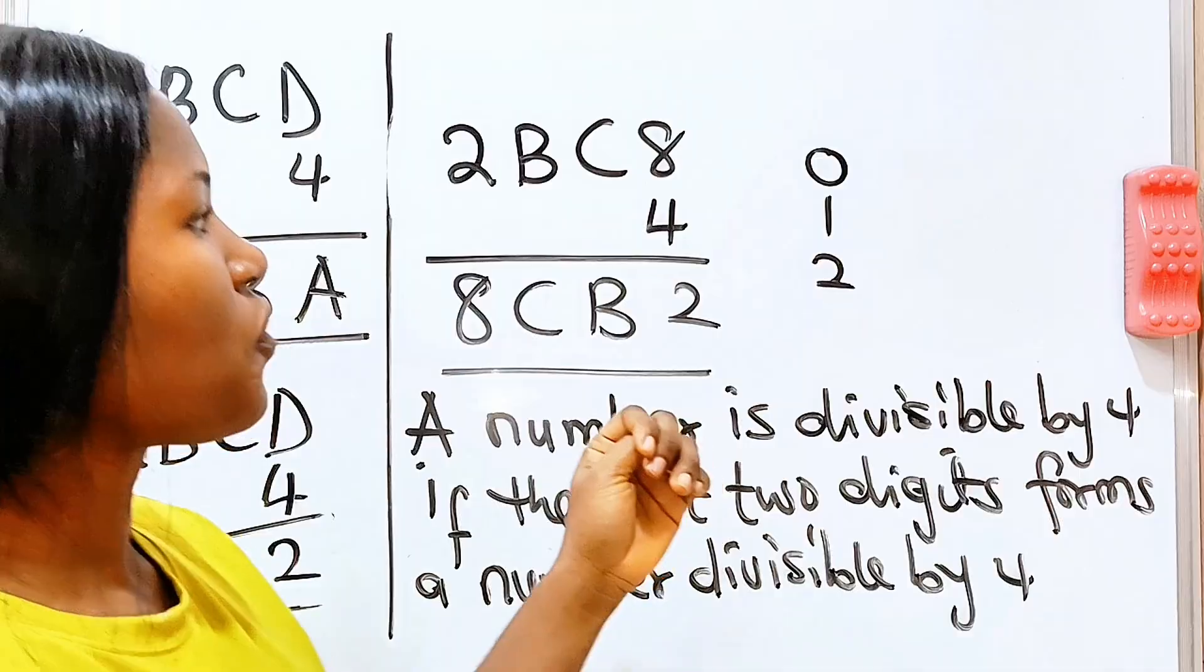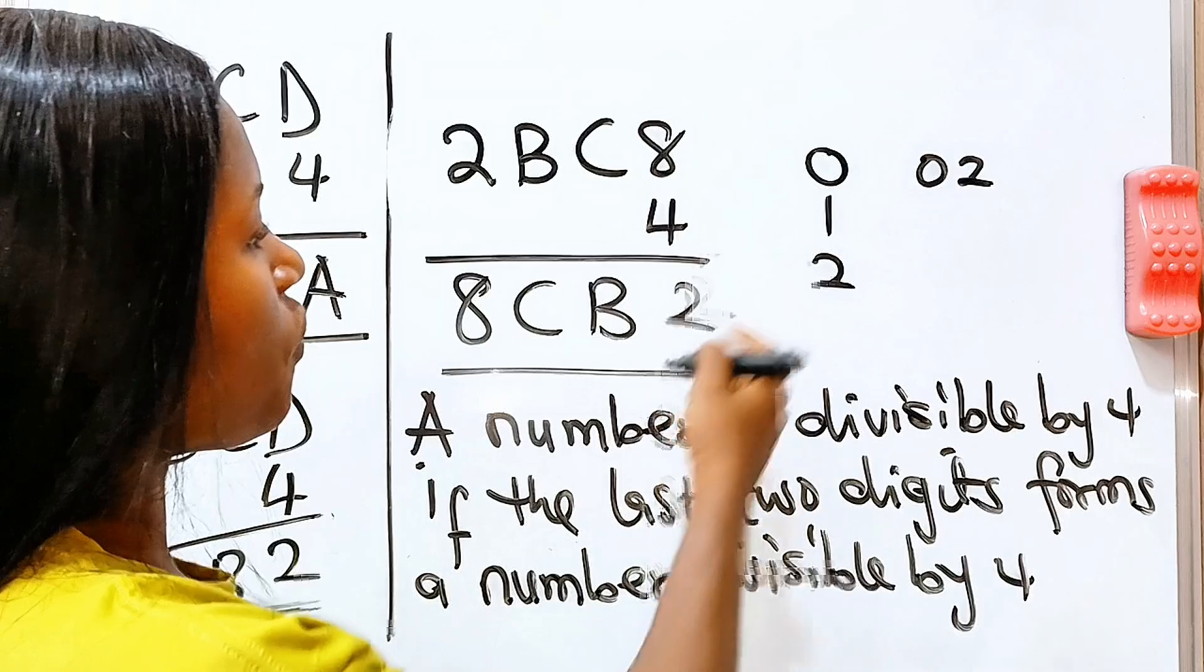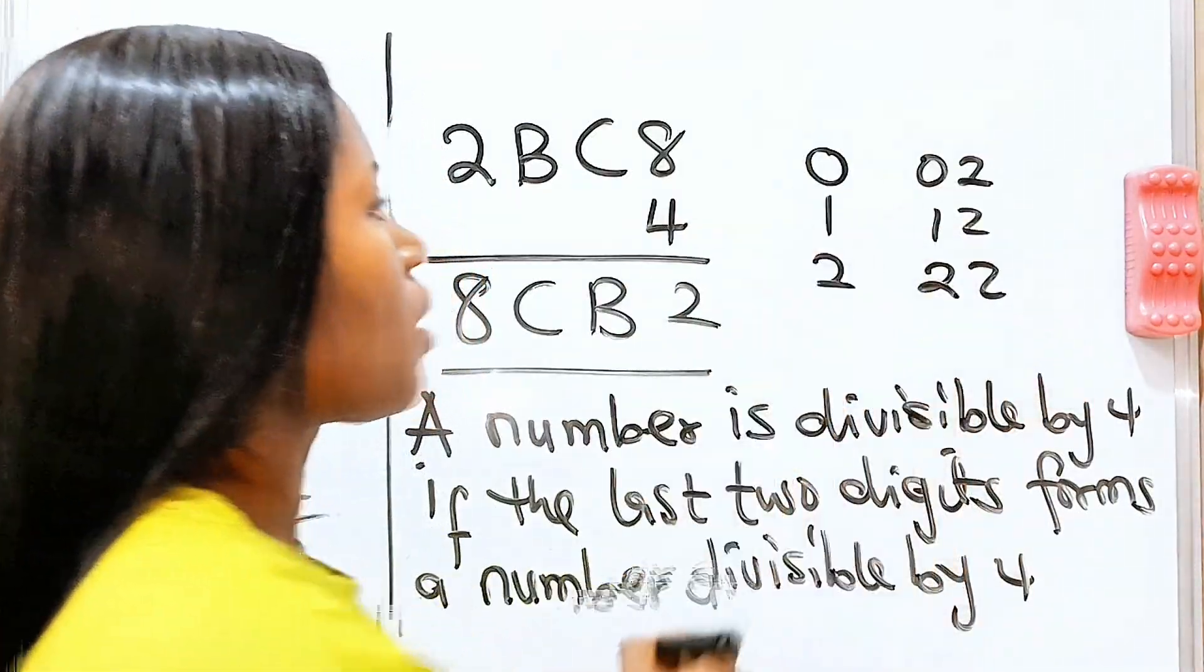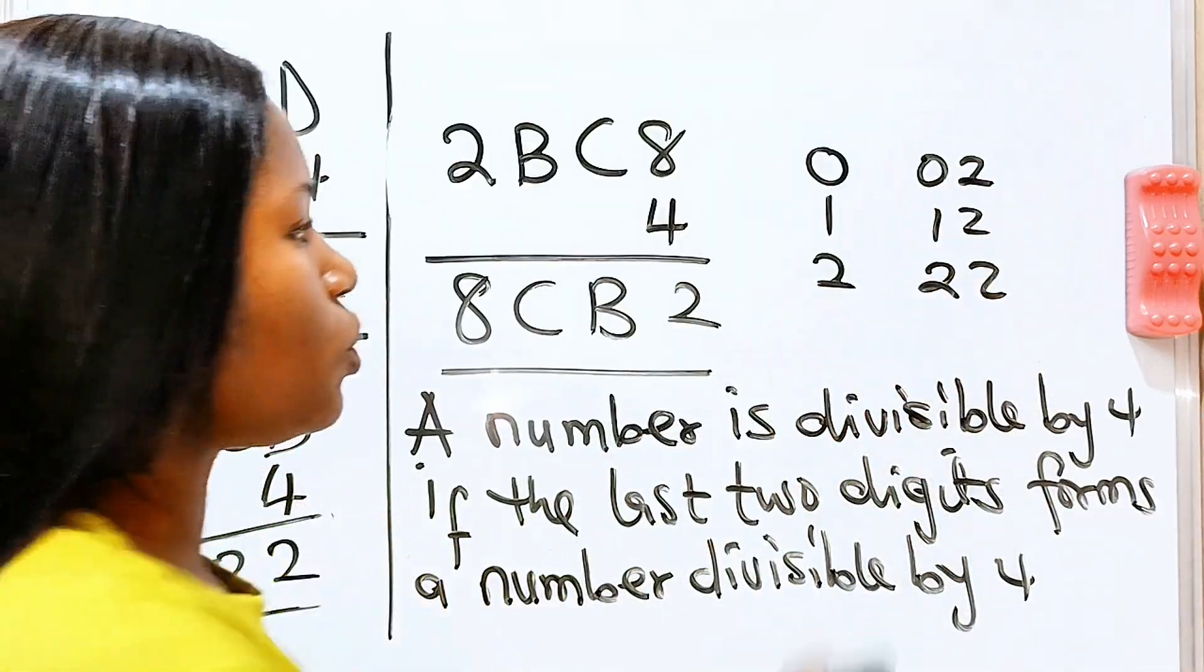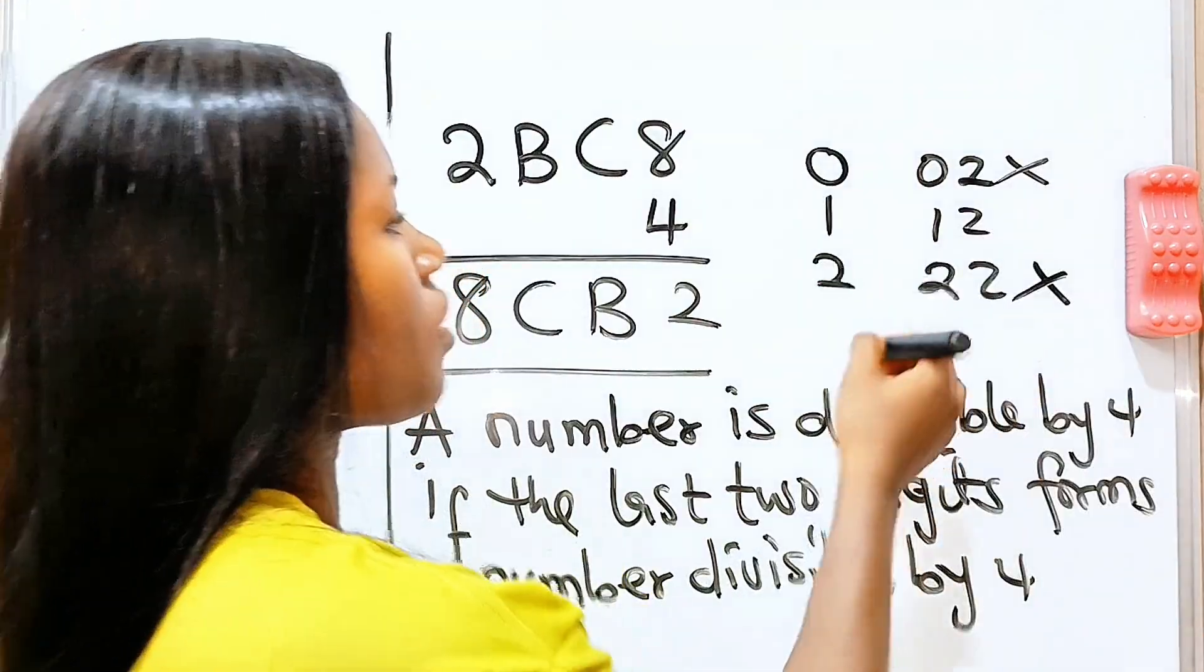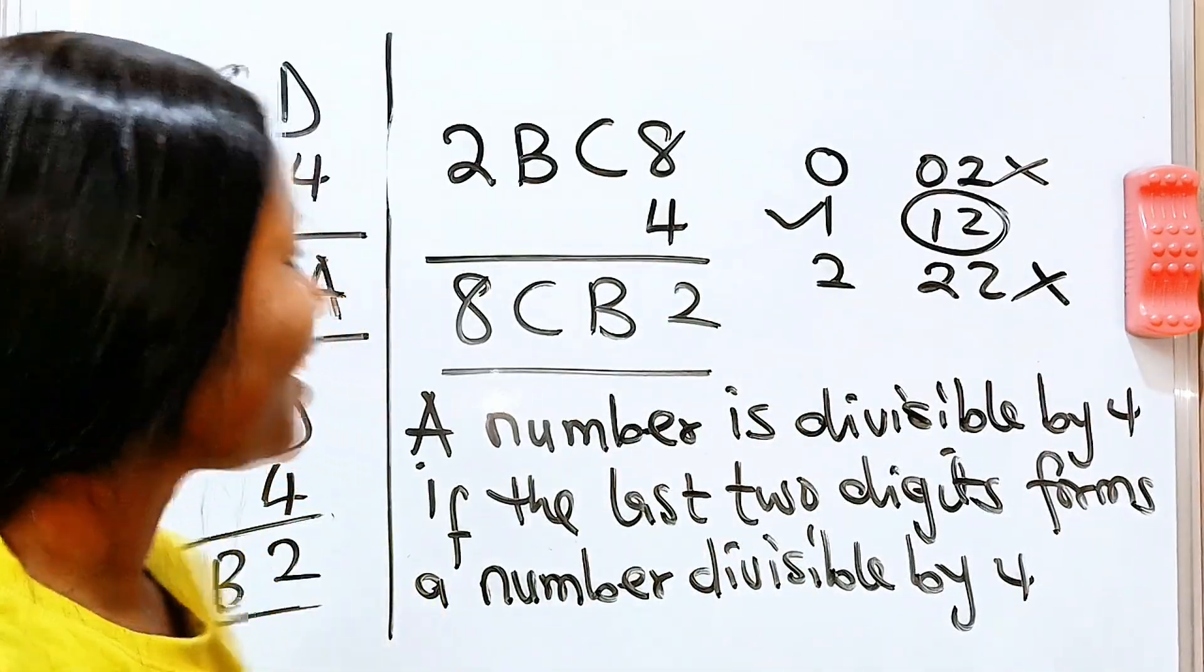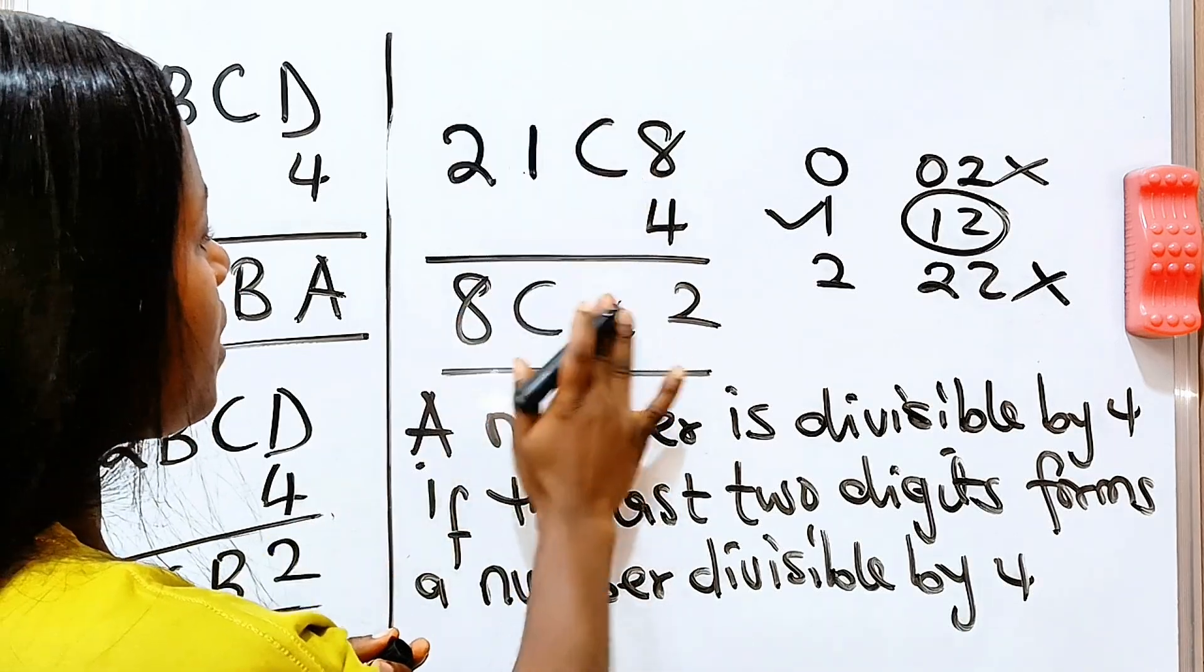So we are going to apply this law of divisibility. If we say our B is 0, that means we are going to have 02. If we say our B is 1, then we are going to have 12. If we say that our B is 2, we are going to have 22. Now, let's check which of them is divisible by 4. 02, is it divisible by 4? No. 22, is it divisible by 4? No. But 12 is divisible by 4. So that confirms that 1 will be the value of B. So we are going to now replace this with 1 and replace this with 1.